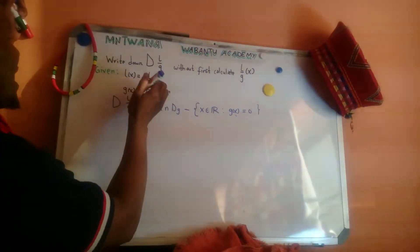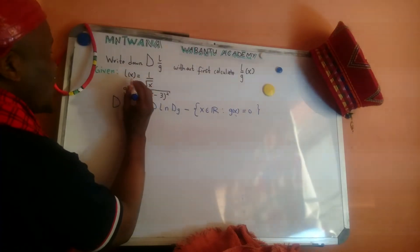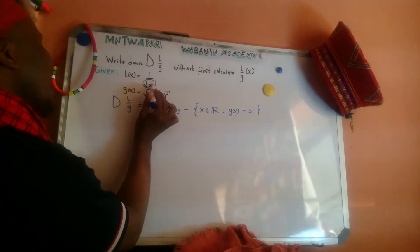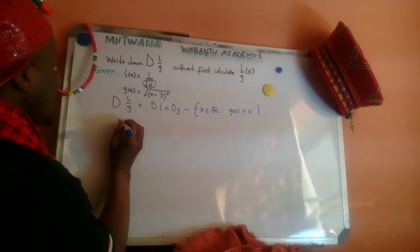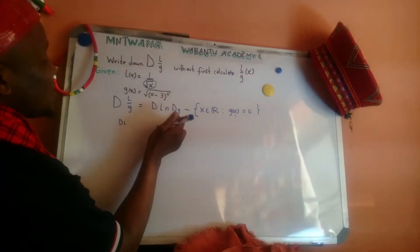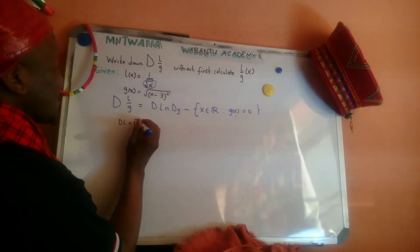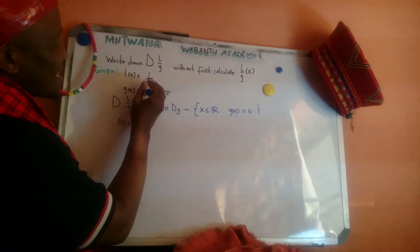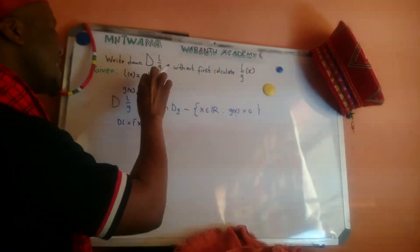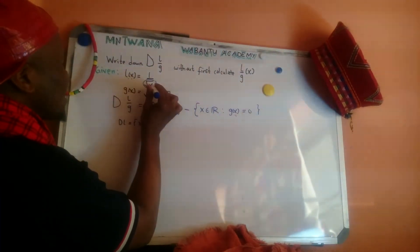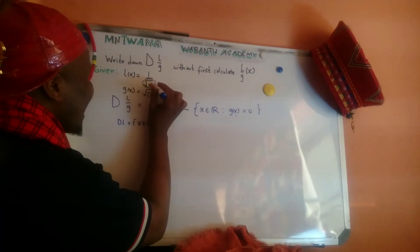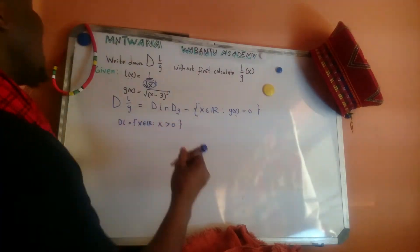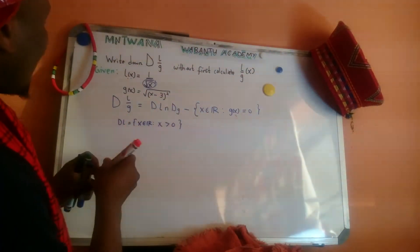Now let's get the domain of l. When you have a root in the denominator, what's inside the root has to be greater than zero. So domain of l: x is an element of the real numbers, but x must be greater than zero. That's our domain for l.